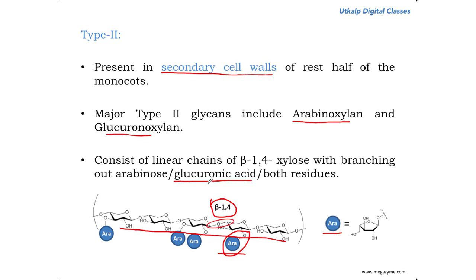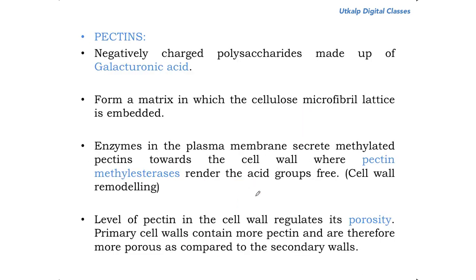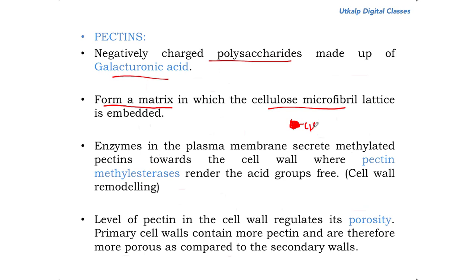Coming to pectins — pectins are heterogeneous mixtures of negatively charged polysaccharides made up of galacturonic acids. Pectins form a matrix in the cell wall in which the cellulose microfibril lattice is embedded. Pectins provide porosity to the cell wall. Enzymes in the plasma membrane secrete methylated pectins — the pectin is synthesized, exported to the outside of the cell through the plasma membrane, and these secreted pectins are methylated in nature.